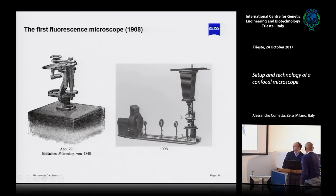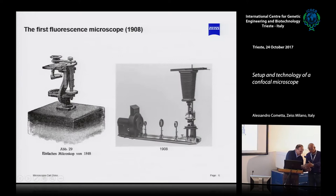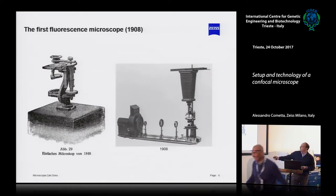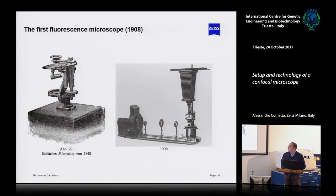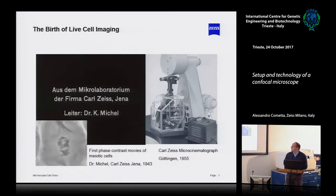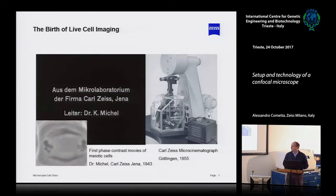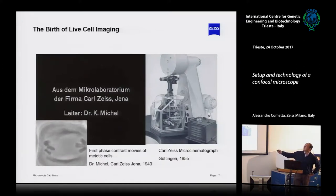The microscope had a lamp. The microscope was very similar to that one, producing light hitting the sample. At the time, August Koehler, speaking about fluorescence, noted there was a side effect when looking at samples — and that was fluorescence. This is one of the first phase contrast movies on meiotic cells. The interesting thing is that this is the microscope with incubation, but this is the camera.